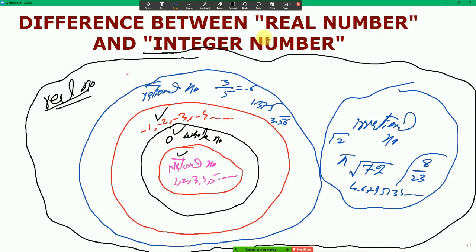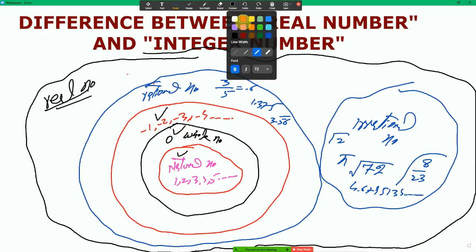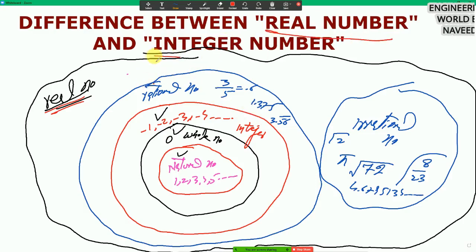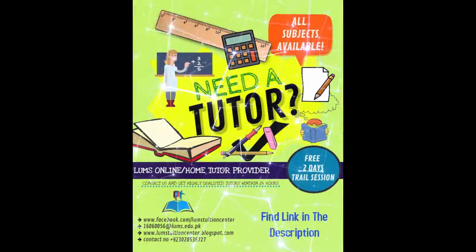So the key difference: in integer numbers there is no decimal, but in real numbers there are decimal numbers. This is the main difference between real numbers and integer numbers. See you in the next video — take care!